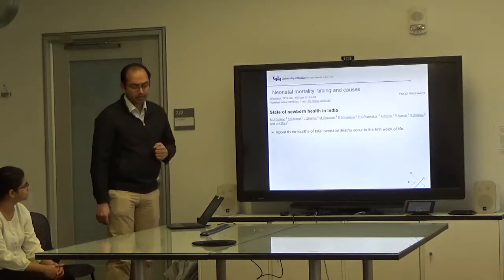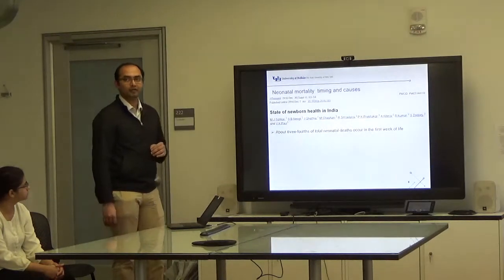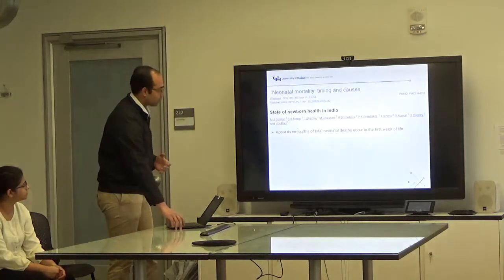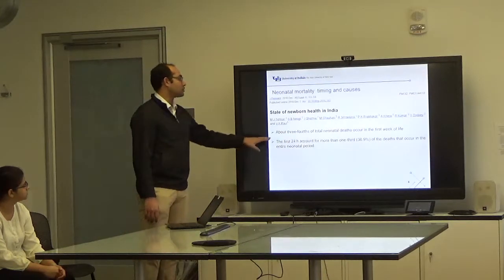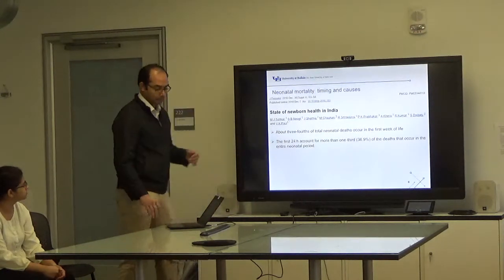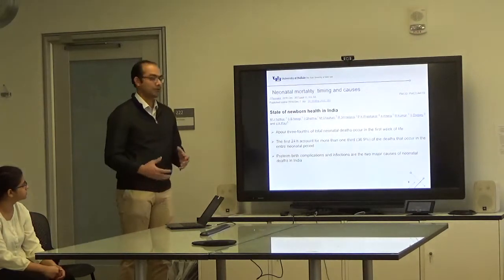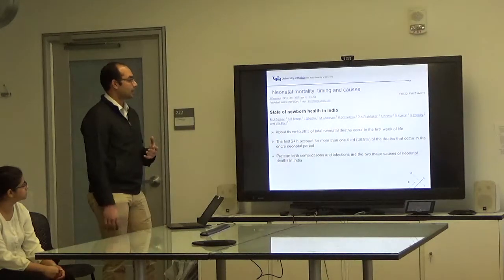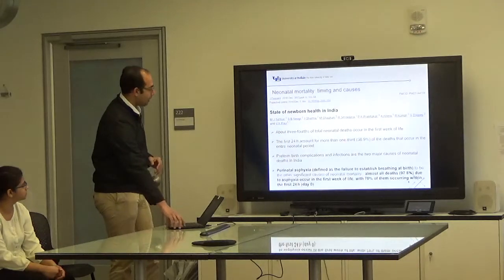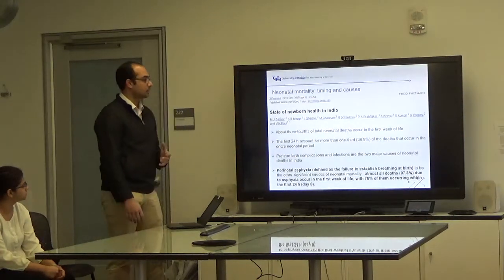In this neonatal mortality, the timing and cause is very important. About three-fourths of the neonatal deaths occur within the first week of life. The first week of life is where we need a point-of-care device that can monitor the neonatal death status. Out of that, the first 24 hours accounts for about one-third of the deaths out of the whole neonatal period. The first 24 hours becomes more important.